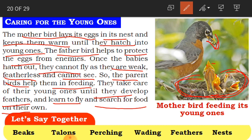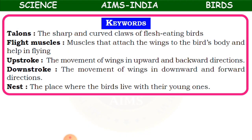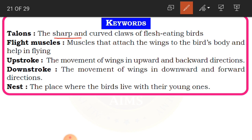Here are some important words connected to birds: beaks, talons, patching, wading, feathers, nests. Try to learn the spellings of these words. Talons means the sharp and curved claws of flesh-eating animals — for example, vultures and eagles have very sharp curved claws called talons.